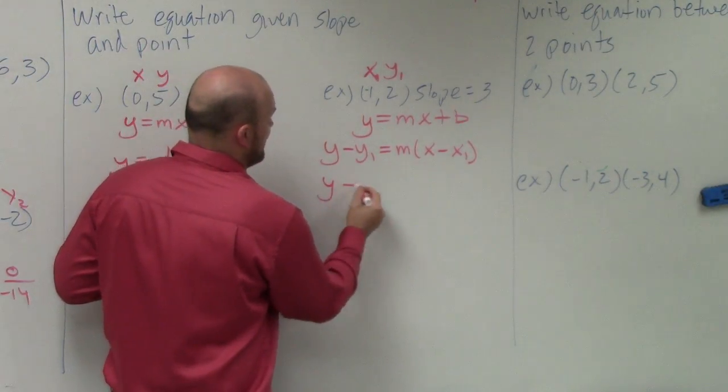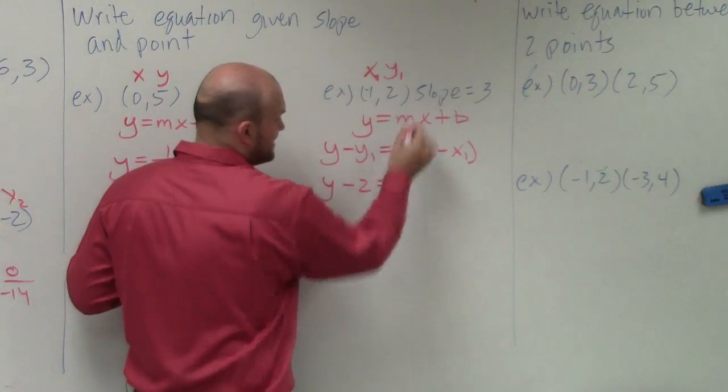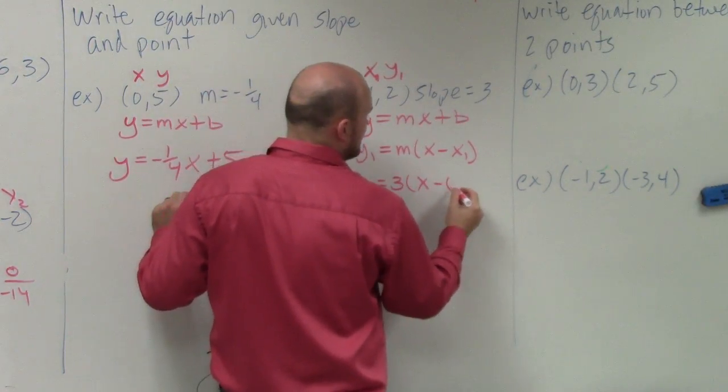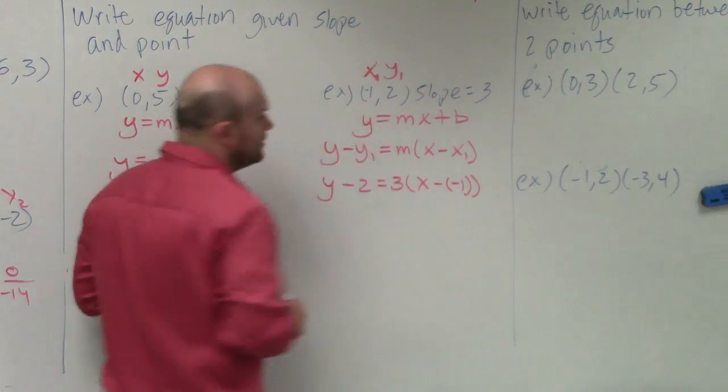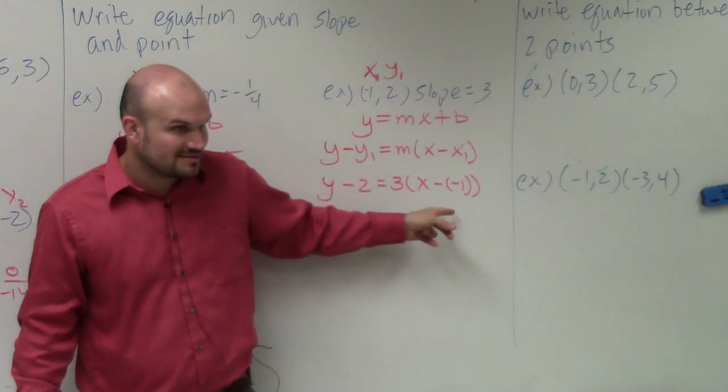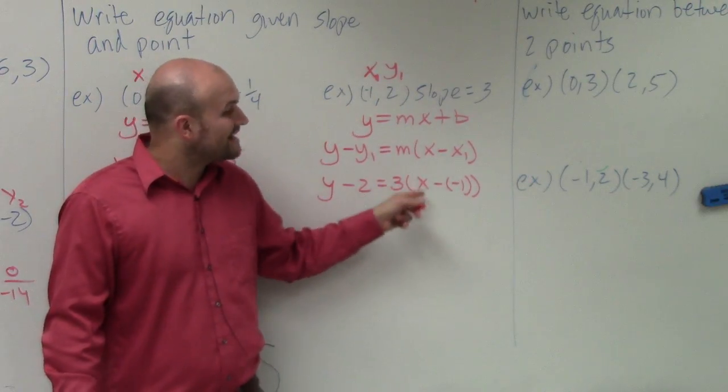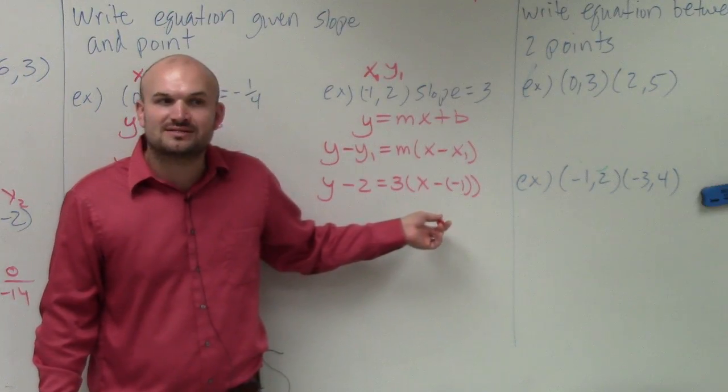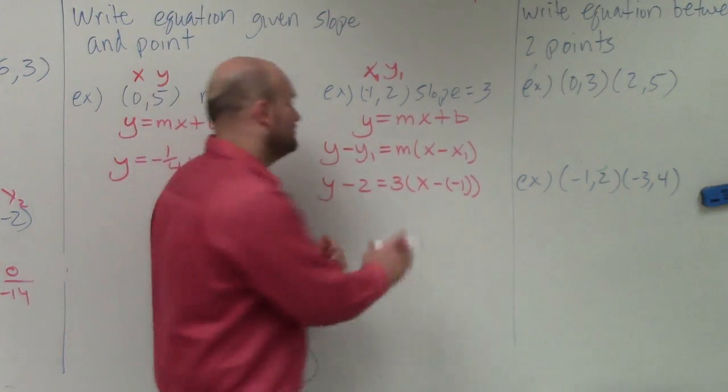So we'd have y minus 2 equals my slope, which is 3, times x minus a negative 1. Please note, you guys, please notice how I put that in parentheses, because so many students will just do x minus 1. No, it's x minus a negative 1, which in reality, x minus a negative 1 is the same as x plus 1. Very good.